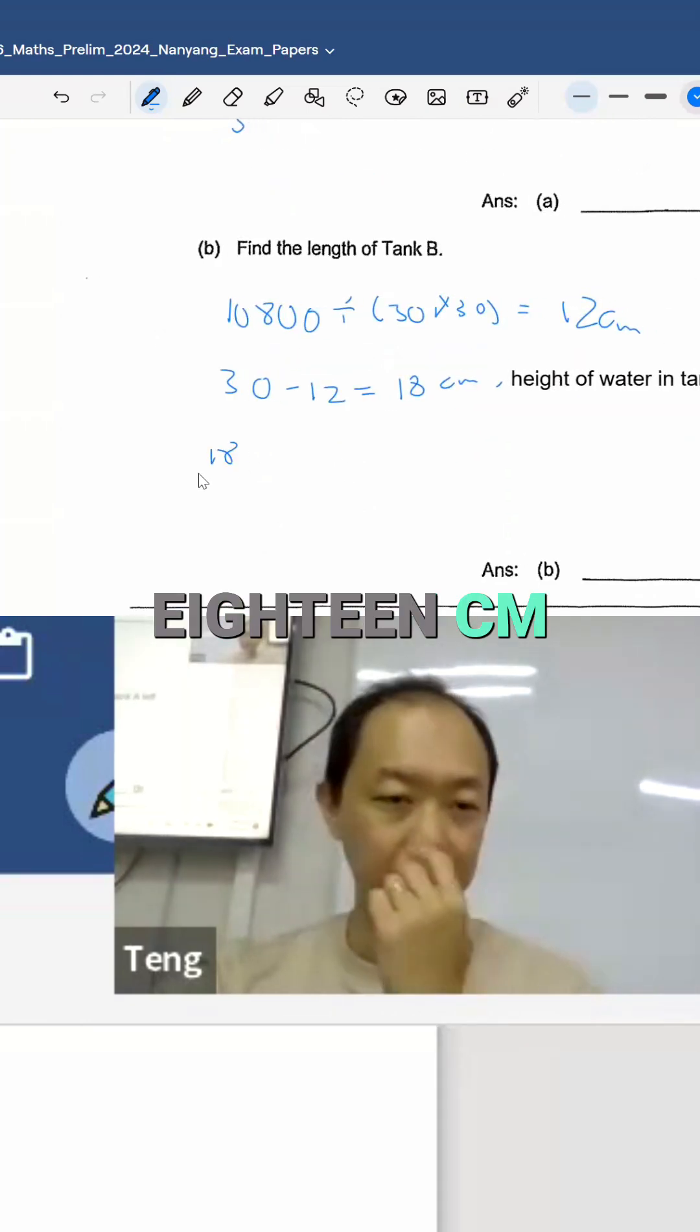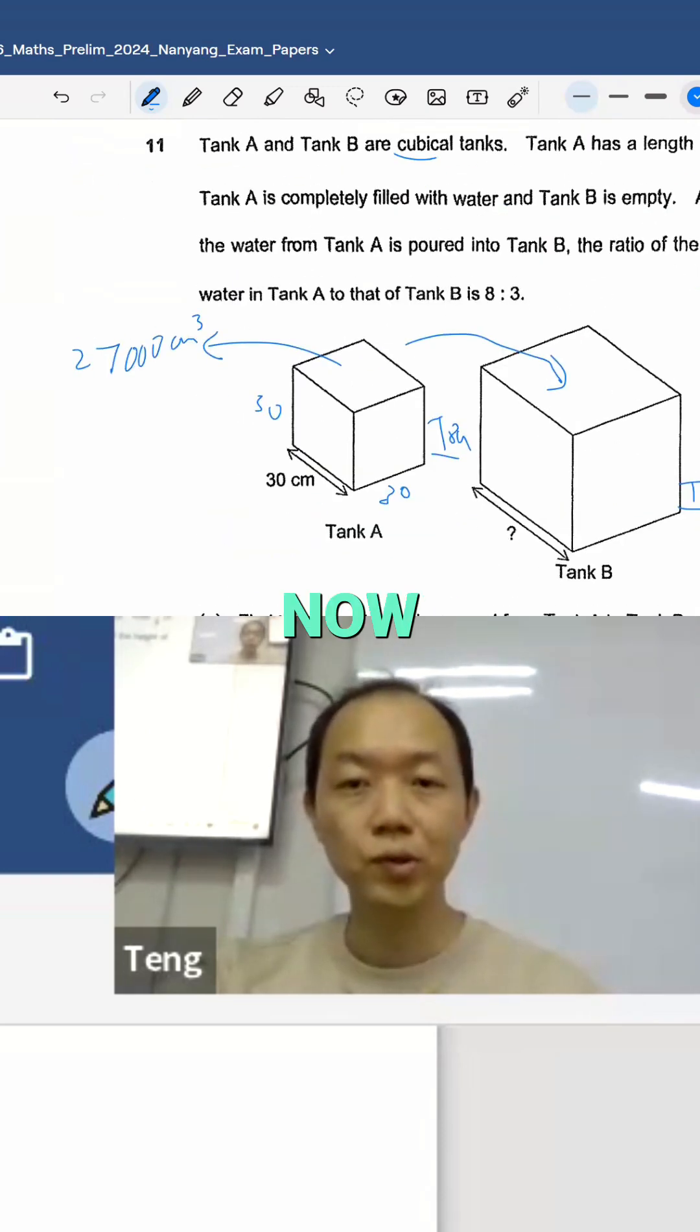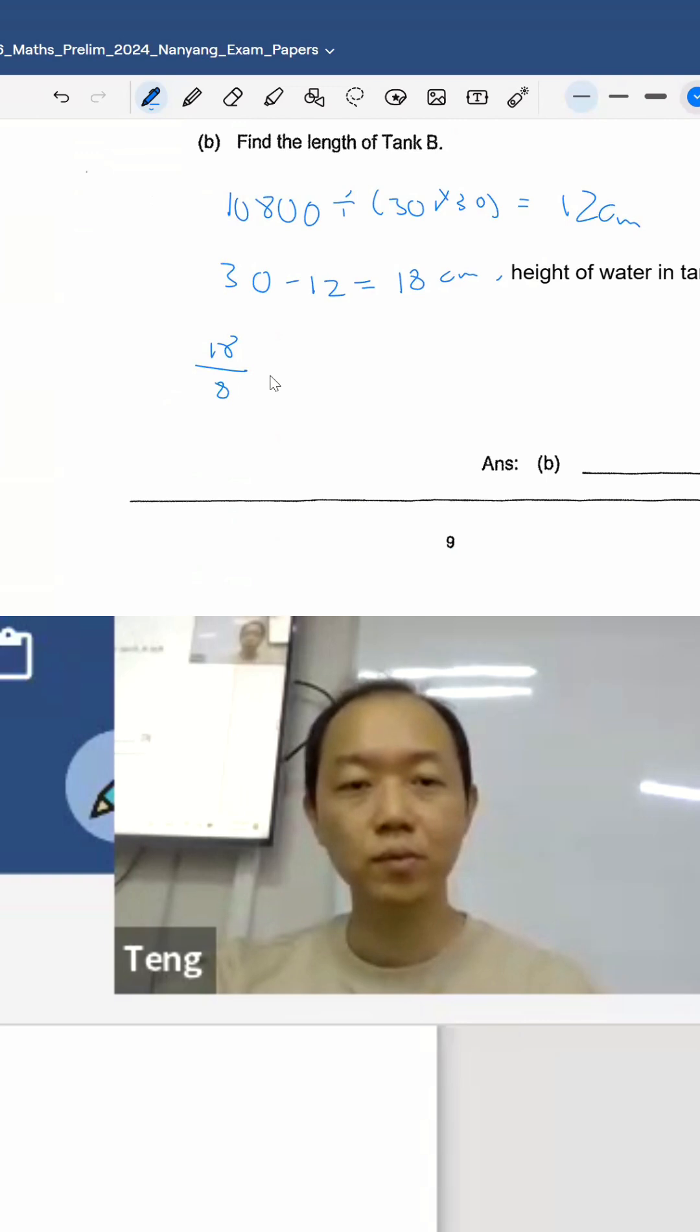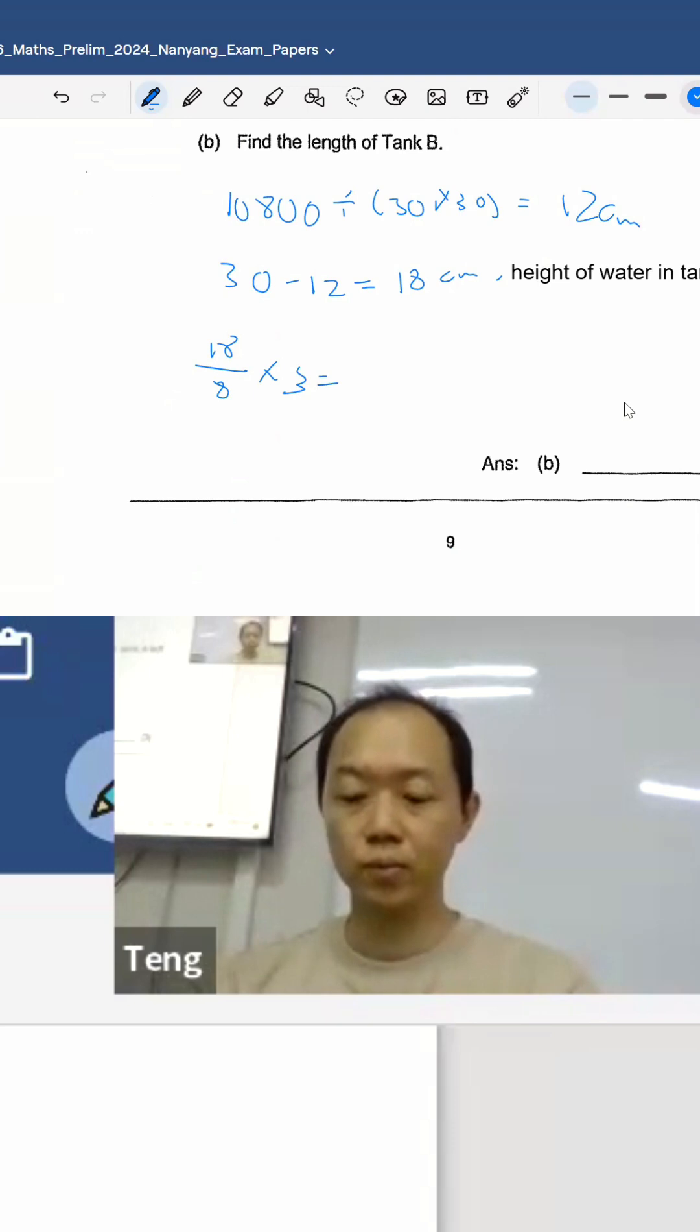18 cm divided by... no, the ratio of the height of water in A, 8, then times 3. 6.75.